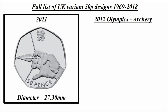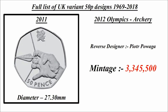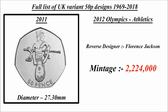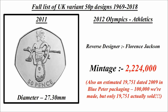Olympics archery: reverse designer Piotr Pawaga, mintage 3,345,500. Olympics athletics: reverse designer Florence Jackson, mintage 2,224,000. Also, an estimated 19,751 dated 2009 exist in Blue Peter packaging — 100,000 were made but only 19,751 were actually sold.